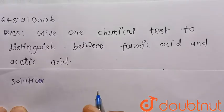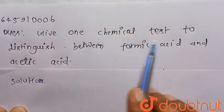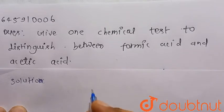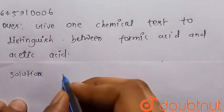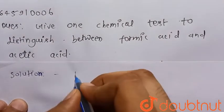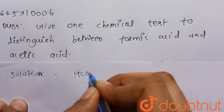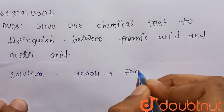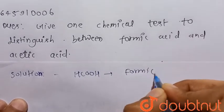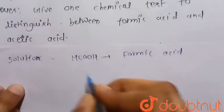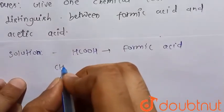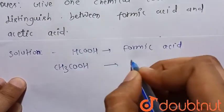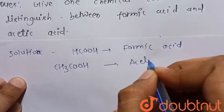Hello everyone, consider the given question: Give one chemical test to distinguish between formic acid and acetic acid. We know that HCOOH is the formic acid and CH₃COOH is the acetic acid.